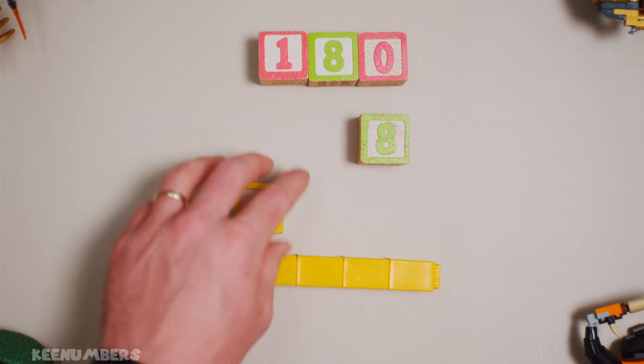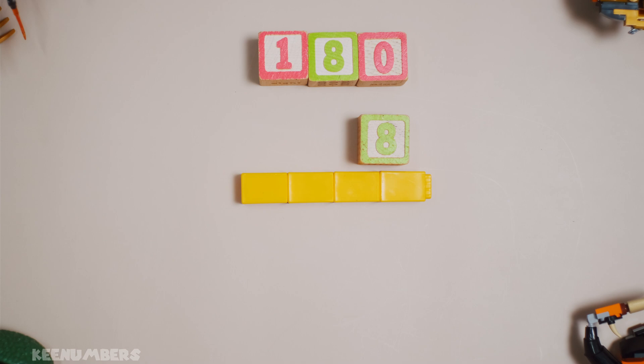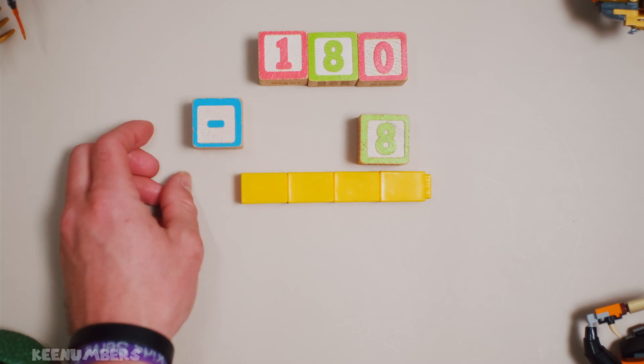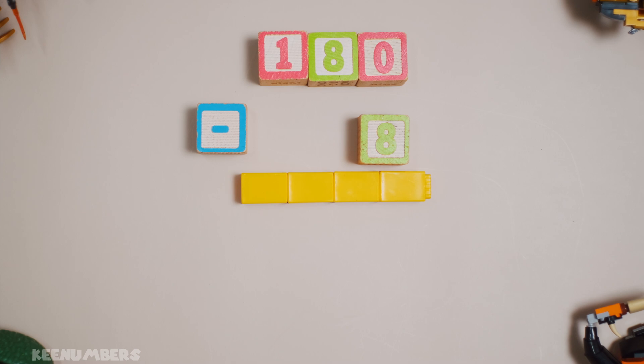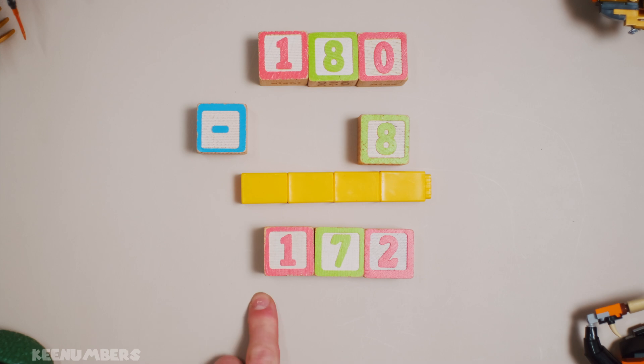What number plus eight gives you 180? In other words, you're looking at the difference of 180 and good old eight. Well, this is not too hard. Go backwards from 180 eight times and you'll get to 172. So that's the supplementary angle.